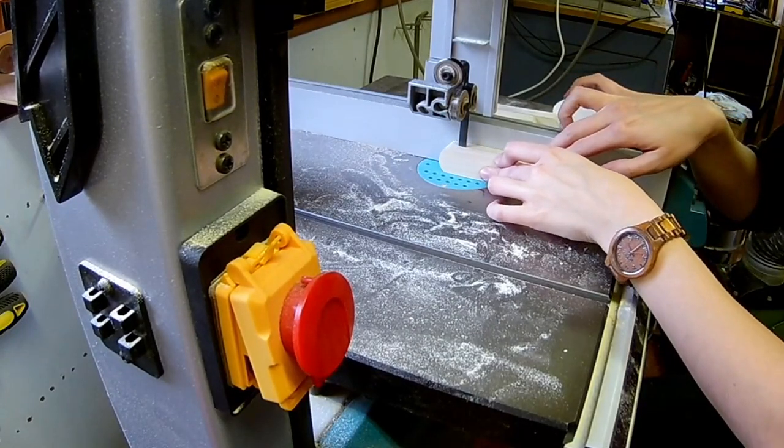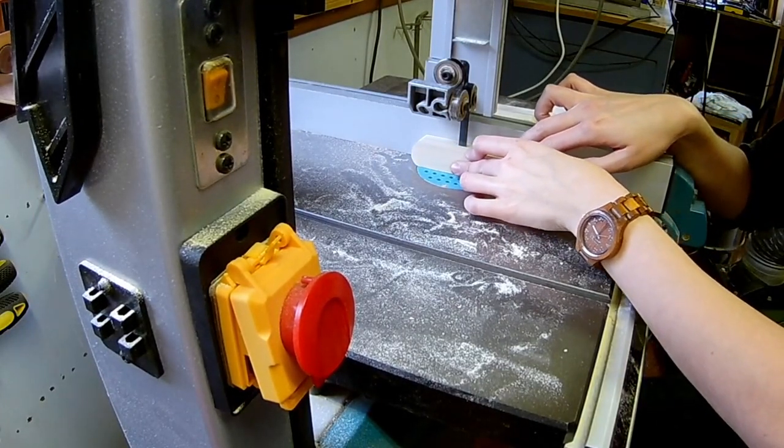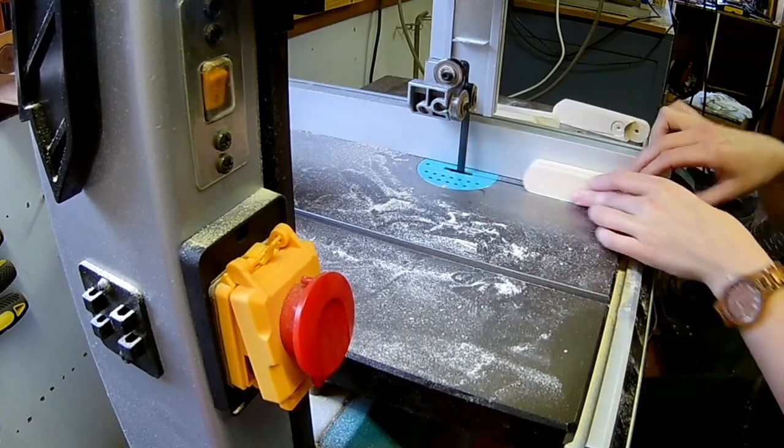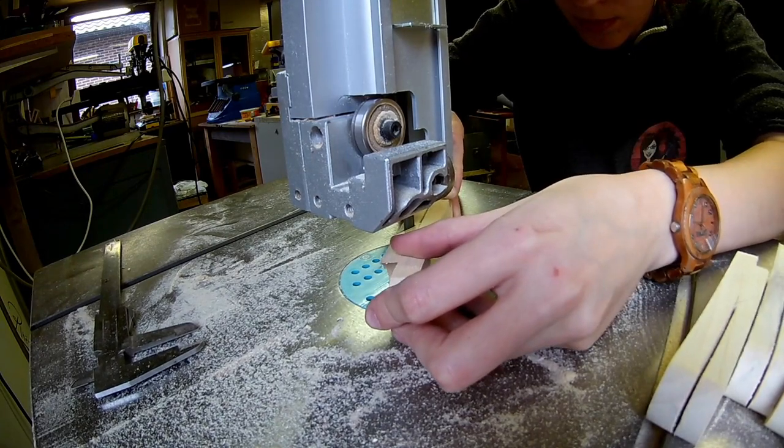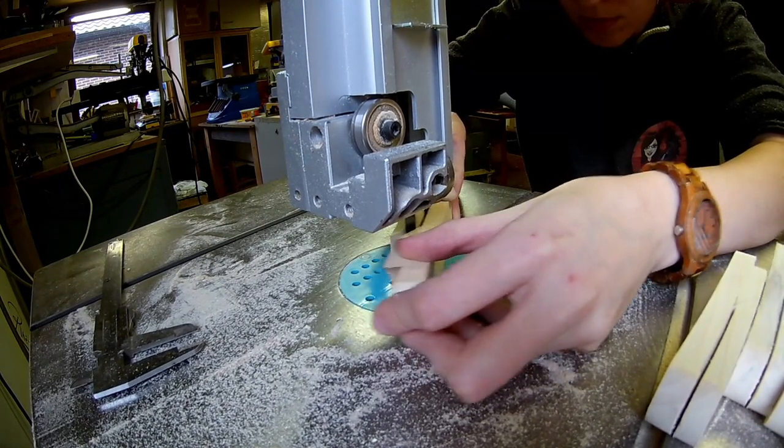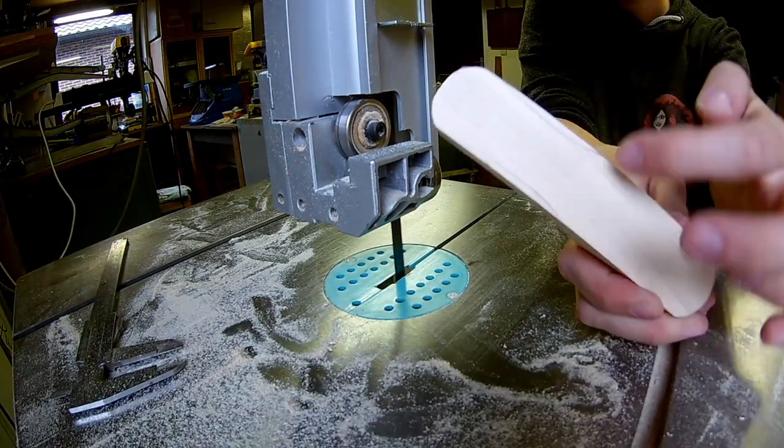Let's give the handle of the bottle opener some shape. My handle is 1cm thick. Some more shaping on the sides.